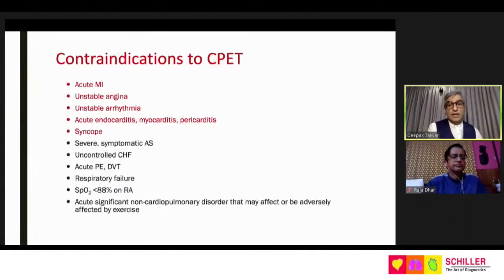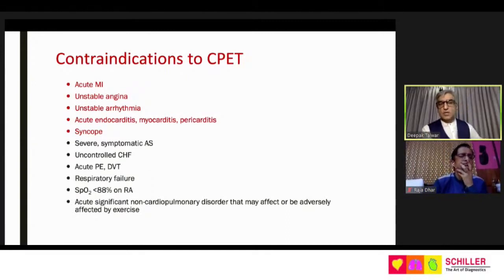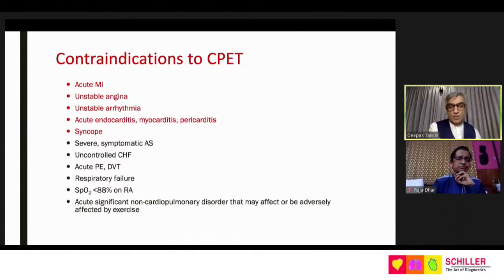CPET is also important for prognostic significance, particularly surgical risk — for patients undergoing pneumonectomy or lobectomy with borderline respiratory reserve. A VO2 max of around 14 mL/min/kg is considered adequate to proceed with pneumonectomy. Contraindications include acute myocardial infarction, unstable angina, unstable arrhythmias, acute endocarditis, syncope, severe symptomatic aortic stenosis, uncontrolled heart failure, acute pulmonary embolism, and severe respiratory failure. Patients who are on oxygen cannot be put on CPET. Cardiac reasons are the most important absolute contraindications.